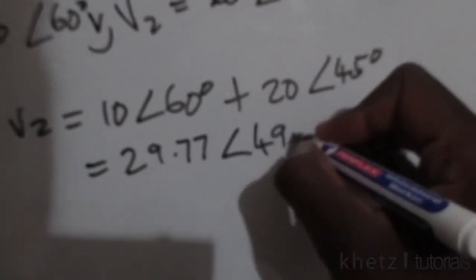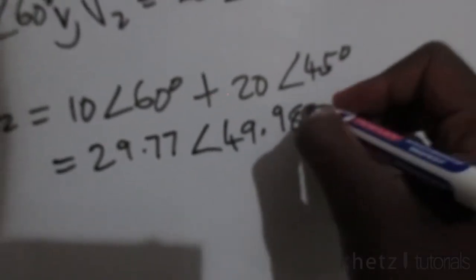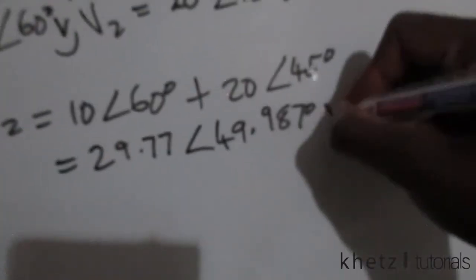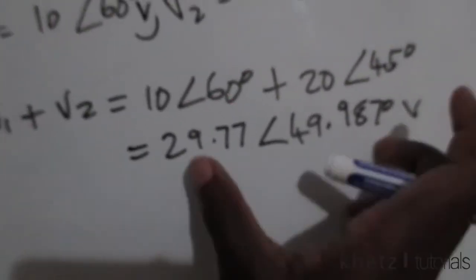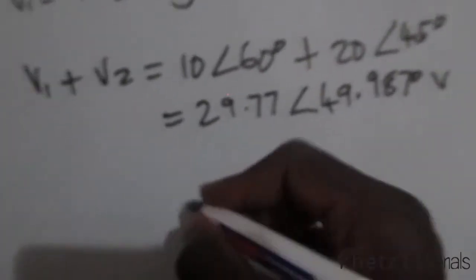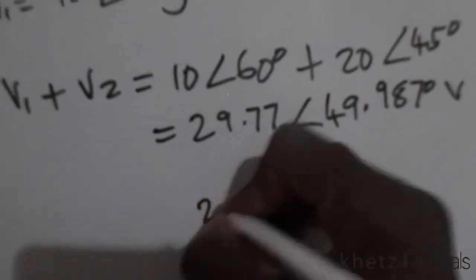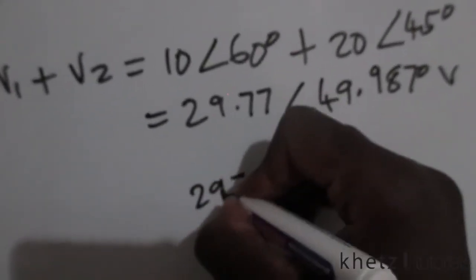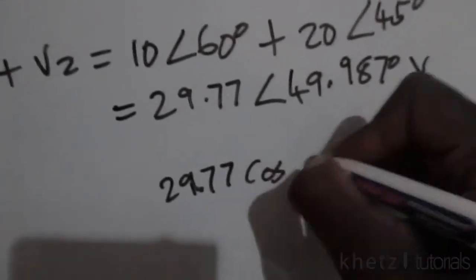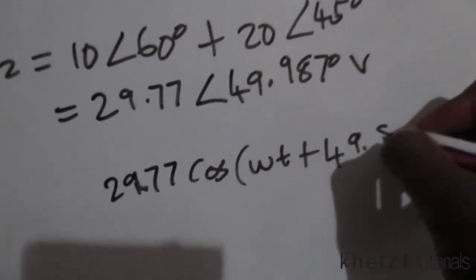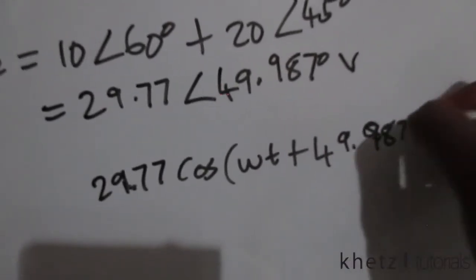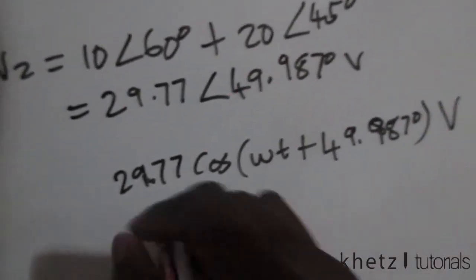Now we can transform this phasor into its corresponding sinusoid. The addition of these two results in a sinusoid of the form 29.77cos(ωt + 49.987°), and that is your answer.